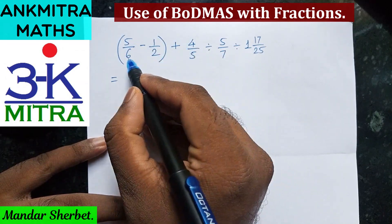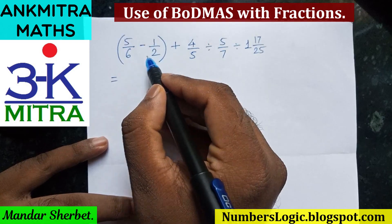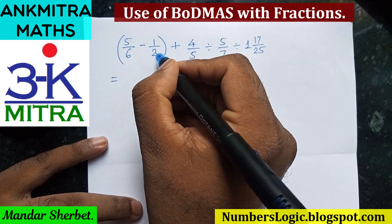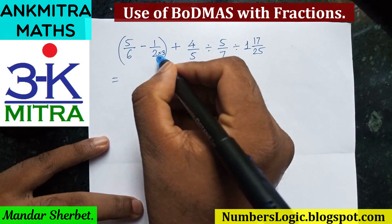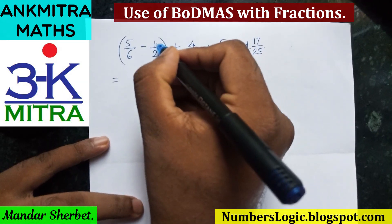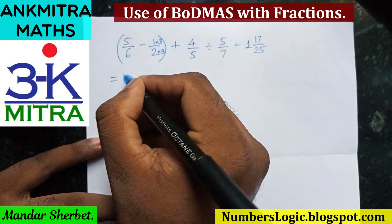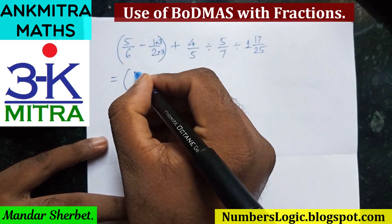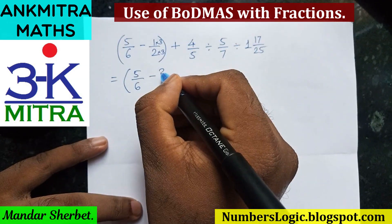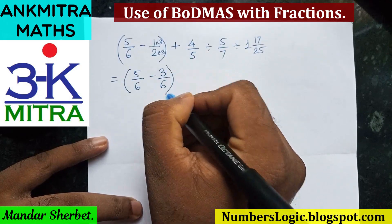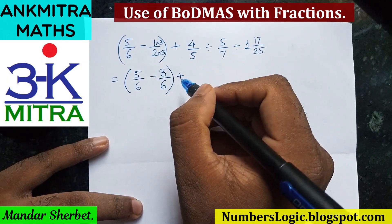To solve the bracket, we need to bring both fractions to a common denominator, since both denominators are different. Multiplying the first denominator by three will take it to six, so we multiply the numerator by three as well. The bracket becomes five upon six minus three upon six.